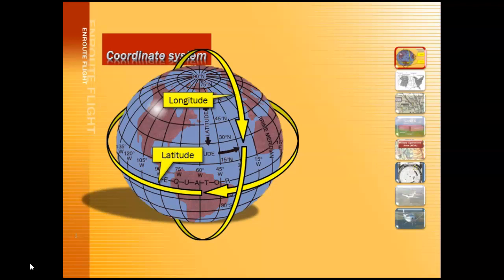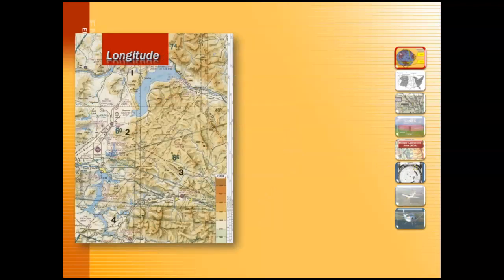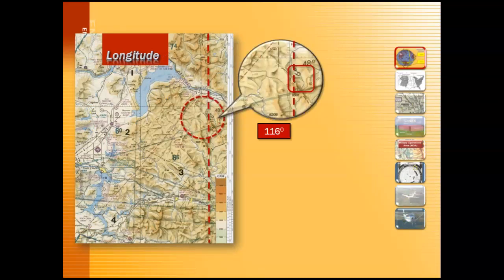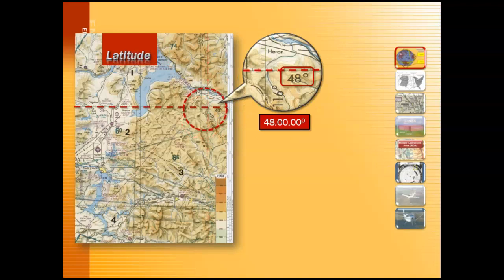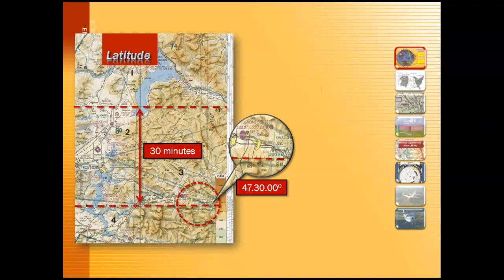If you look closely at the sectional chart, you'll see that it's divided up into lines of longitude and latitude. Between each line of longitude and latitude, you'll see it divided into separate minutes. Here you can see the 116-degree west longitude and the 48-degree north latitude. This area is the 47-degree, 30-minute north latitude.